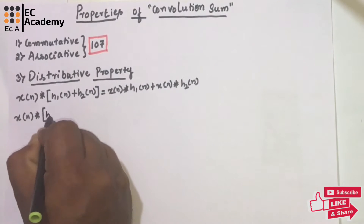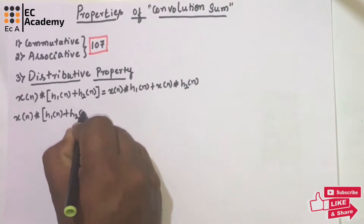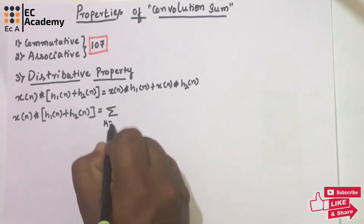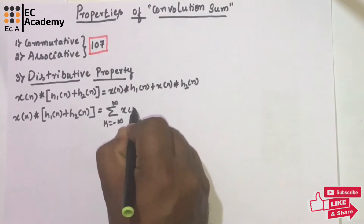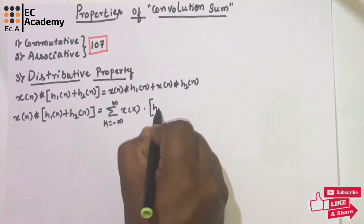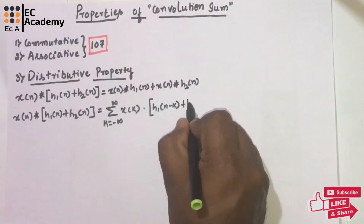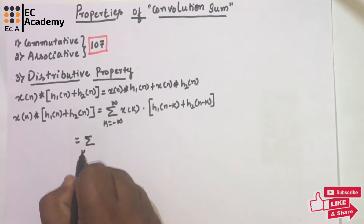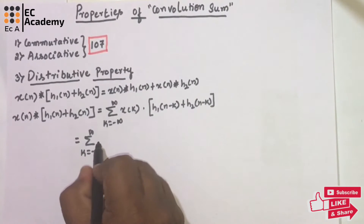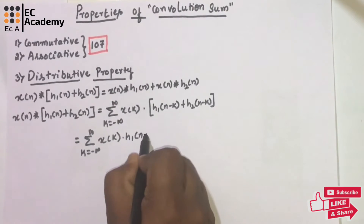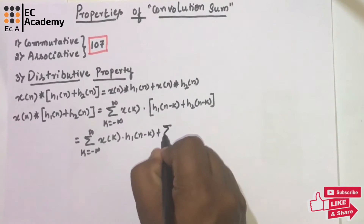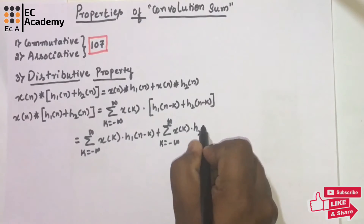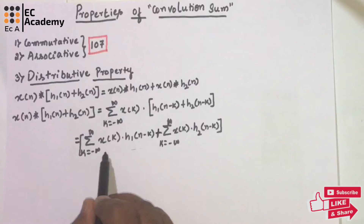Now let us prove this property. Taking the LHS: x(n) convoluted with h1(n) plus h2(n). Using the formula for convolution sum, we can write this as the summation from k equals minus infinity to infinity of x(k) into h1(n minus k) plus h2(n minus k). This can be expanded as summation of x(k) into h1(n minus k) plus summation of x(k) into h2(n minus k).